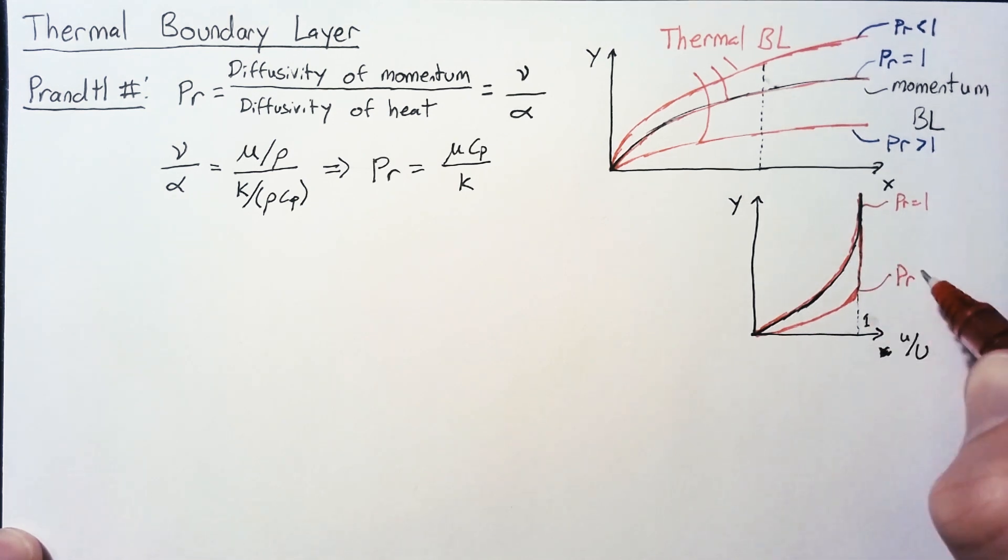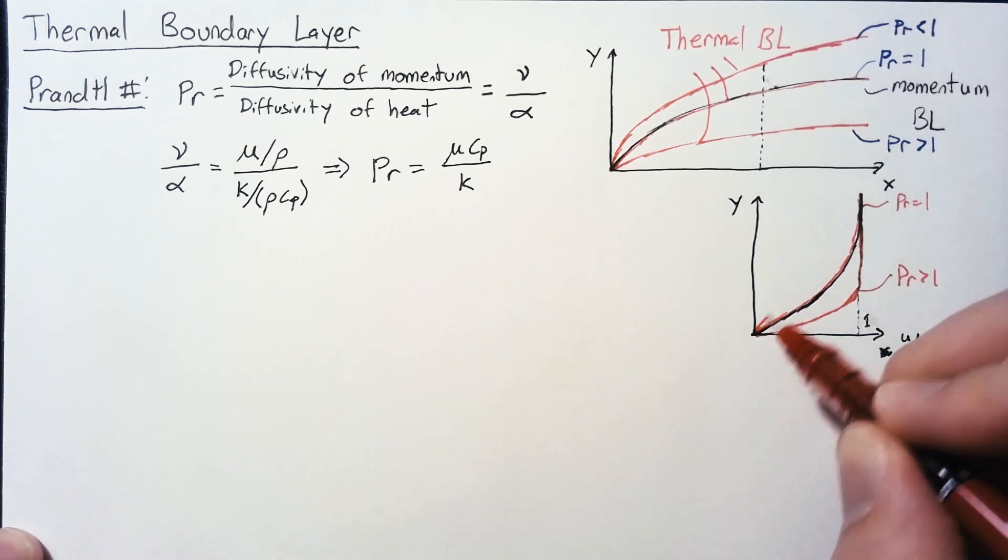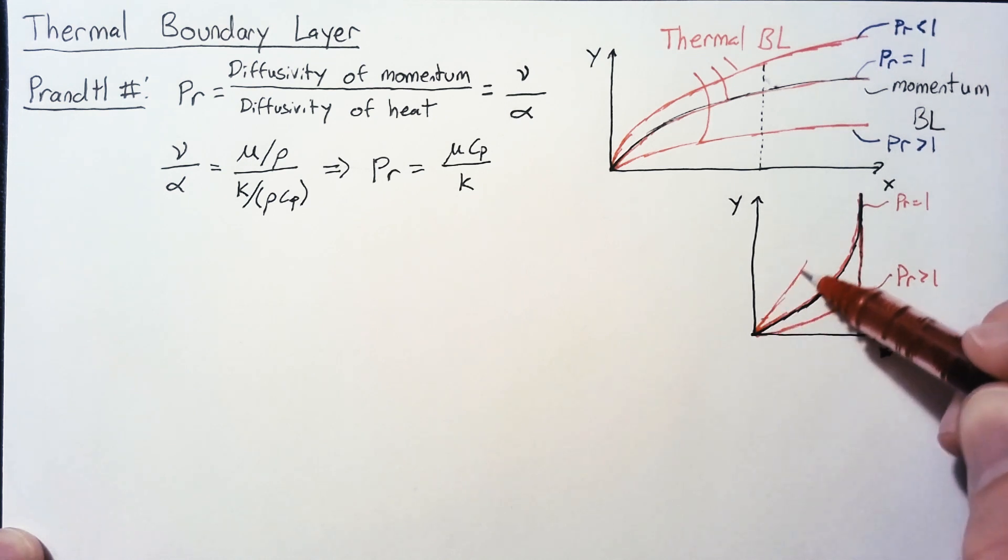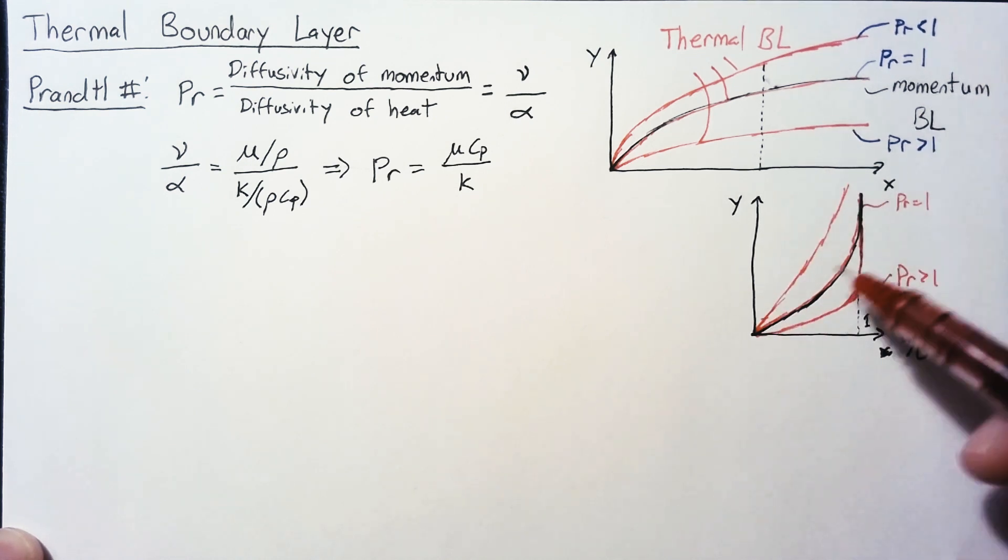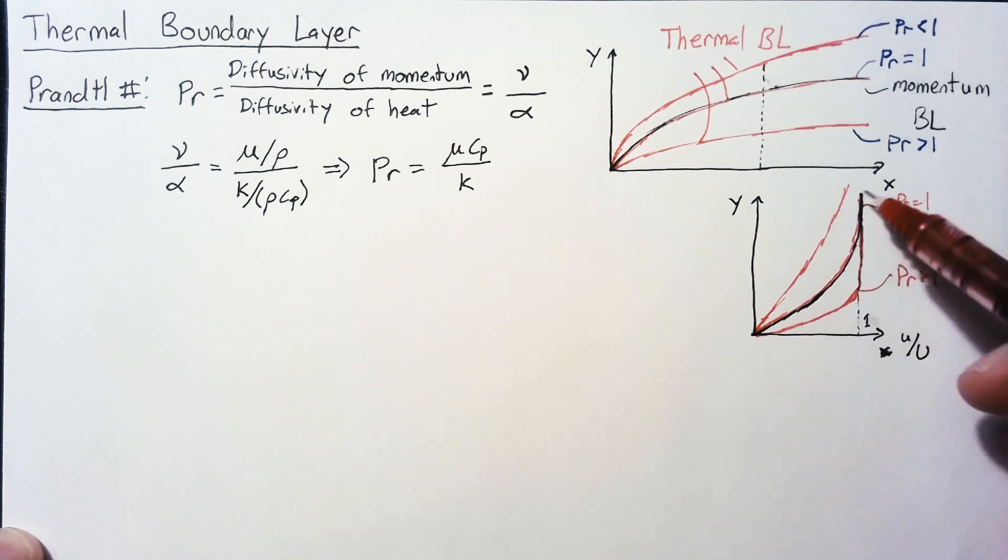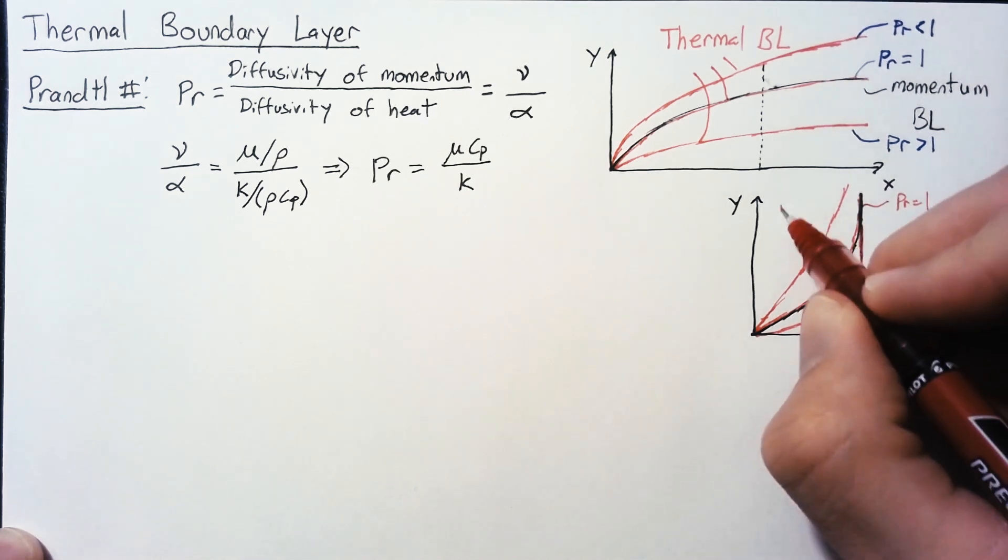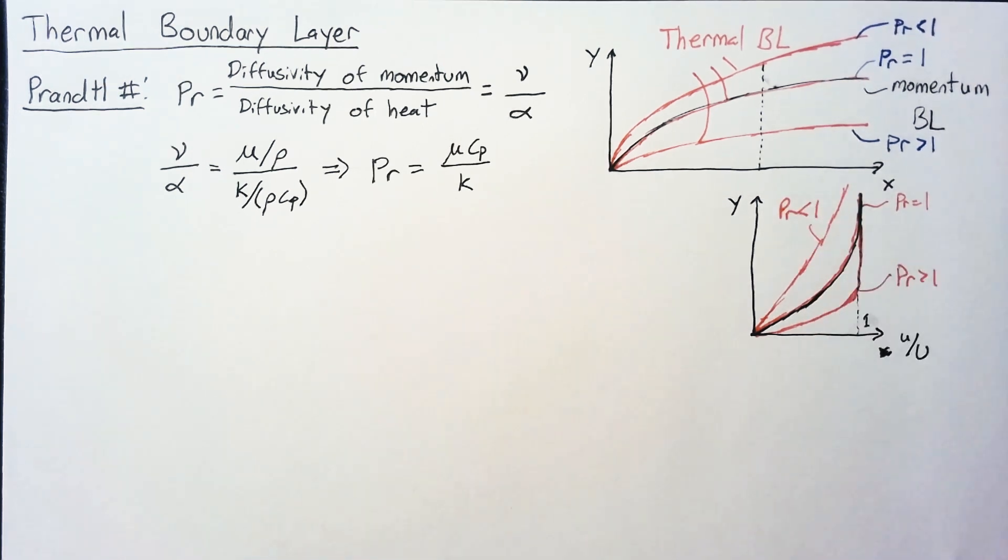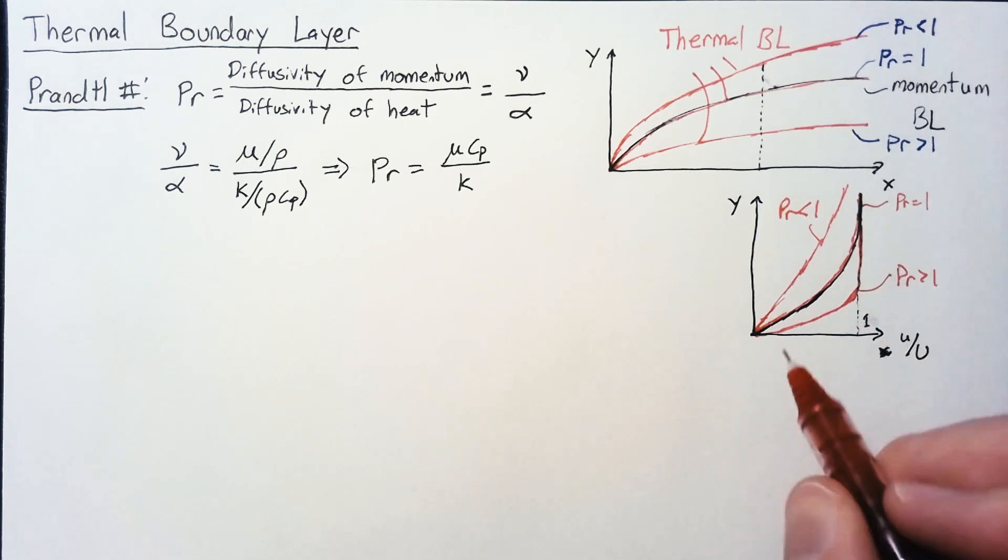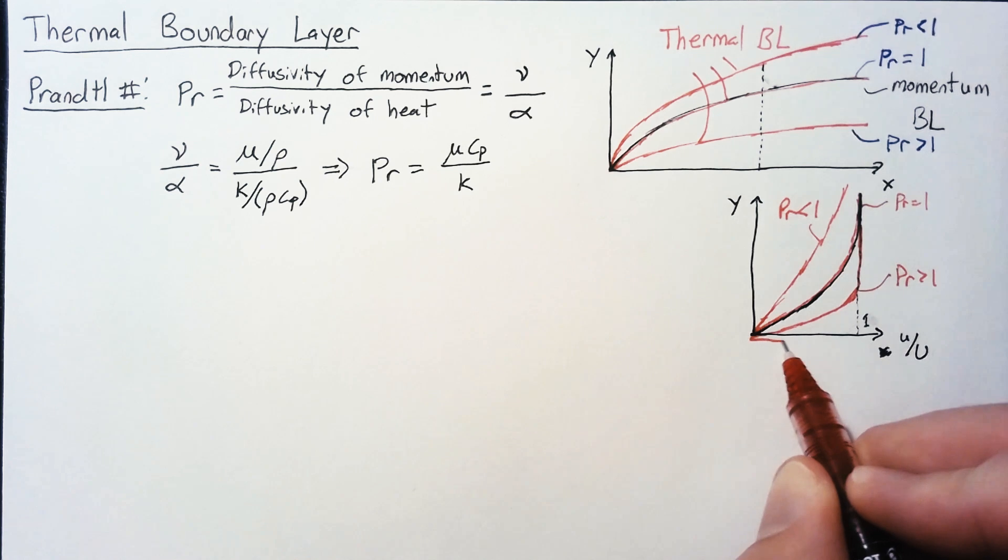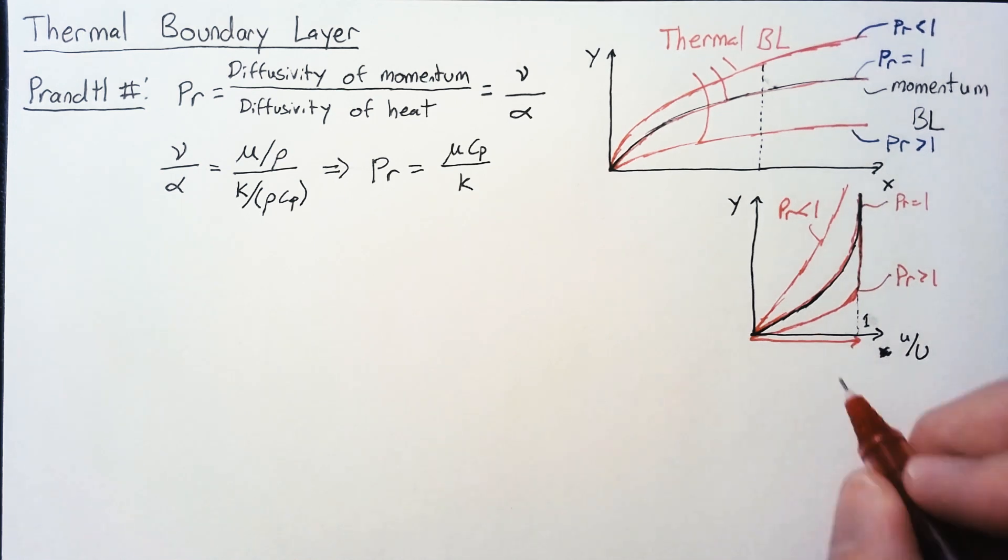For Prandtl number less than one, we're going to diffuse really far into the flow, and it's going to take a really long time before we're able to get to the outside temperature. This x-axis now is not our u over U. Instead, for our thermal boundary layers, our x-axis is the local temperature T minus the temperature of the wall divided by T infinity, the surrounding temperature, minus the temperature of the wall.